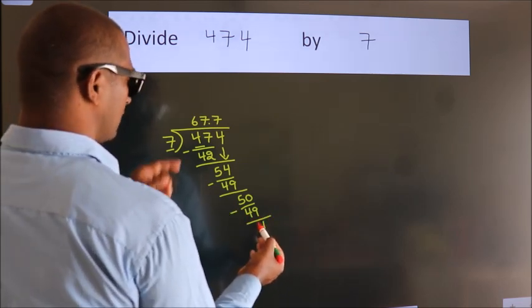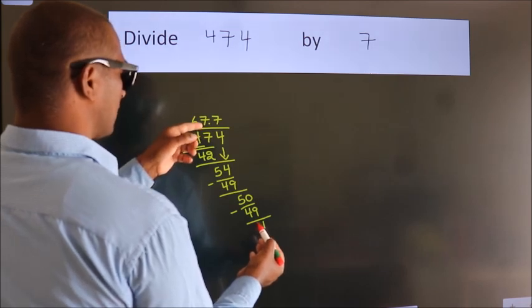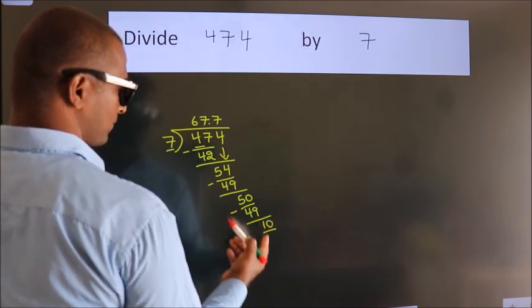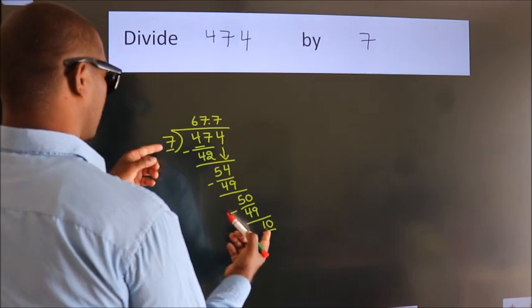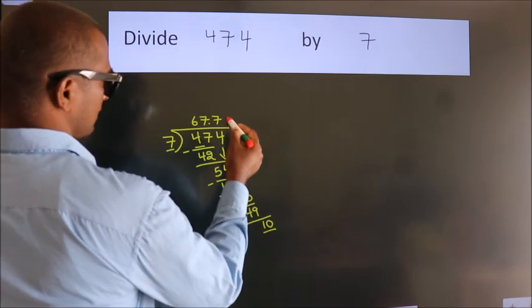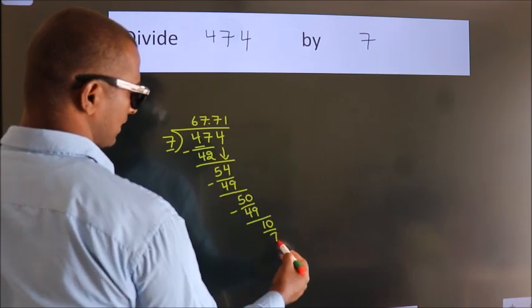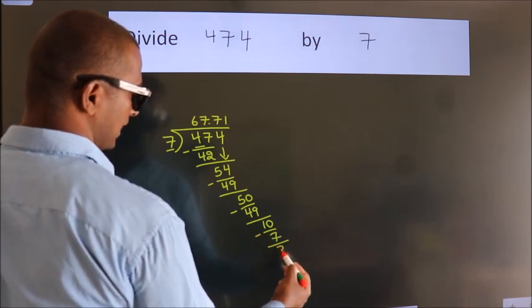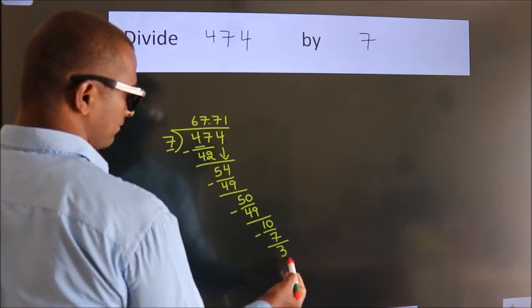After this, we already have the decimal, so directly take 0, making 10. A number close to 10 in the 7 table is 7 times 1, which is 7. Now we subtract and get 3, and the division continues.